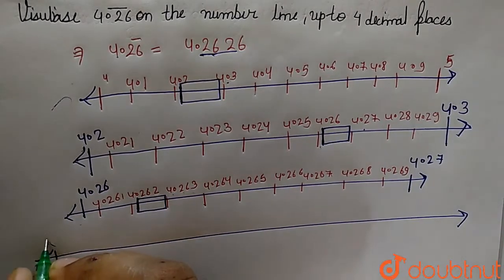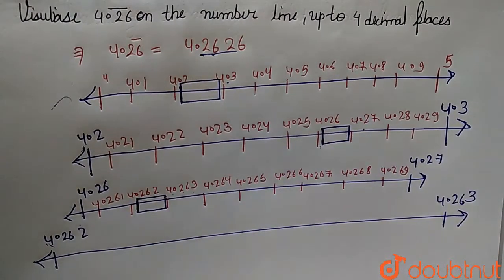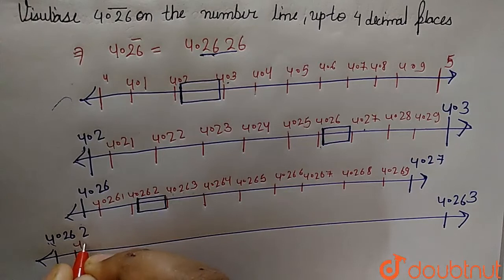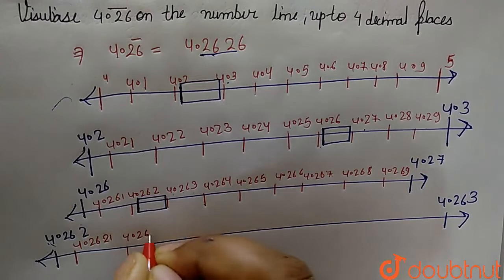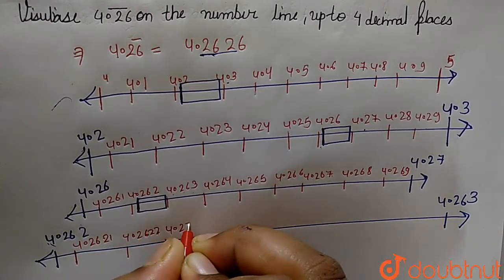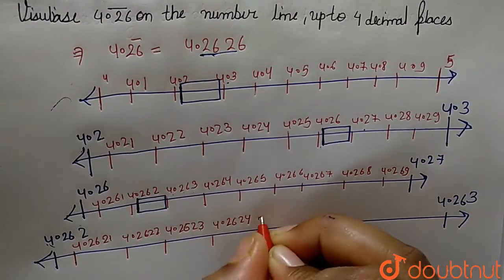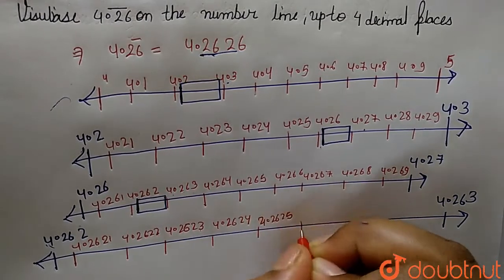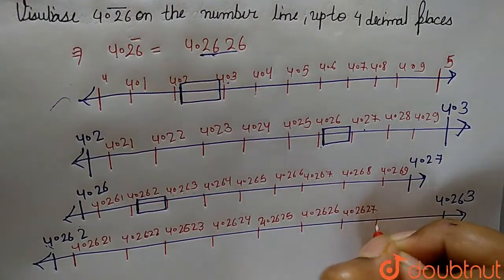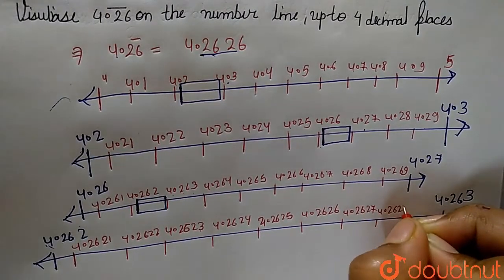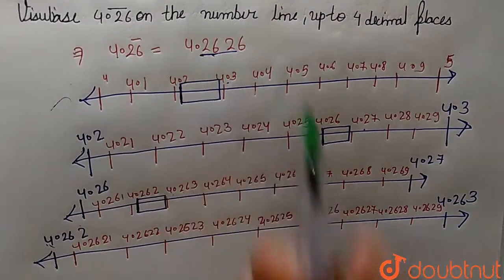On the number line from 4.262 to 4.263, the numbers we will have are: 4.2620, 4.2621, 4.2622, 4.2623, 4.2624, 4.2625, 4.2626, 4.2627, 4.2628, and 4.2629. Here we have to indicate the number 4.2626.